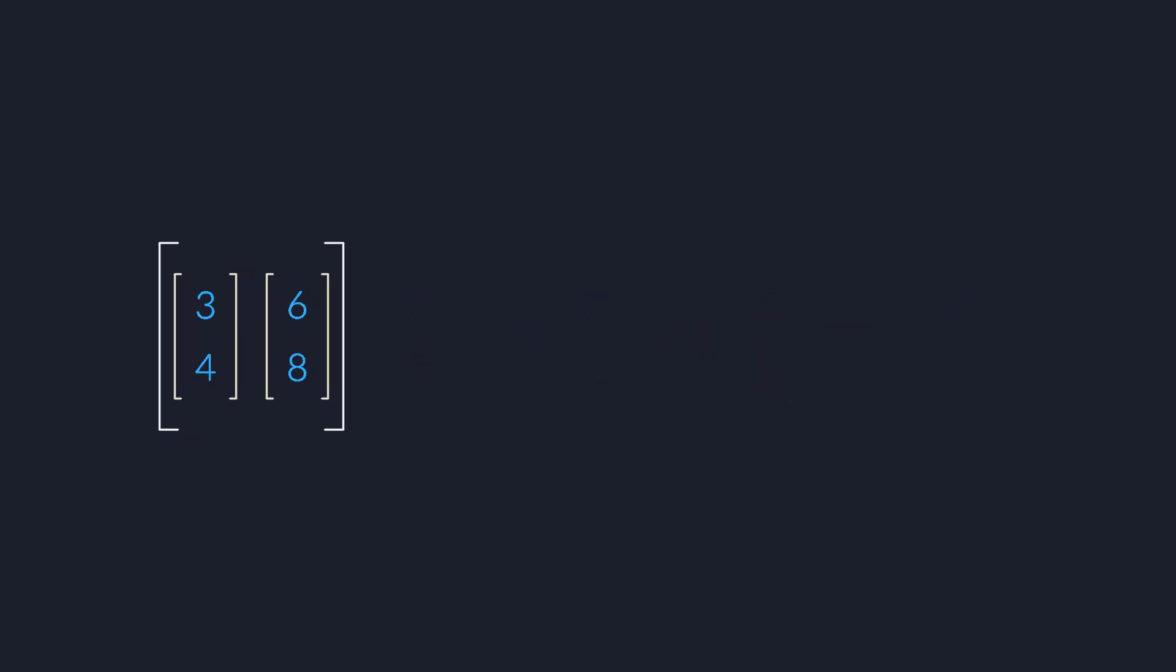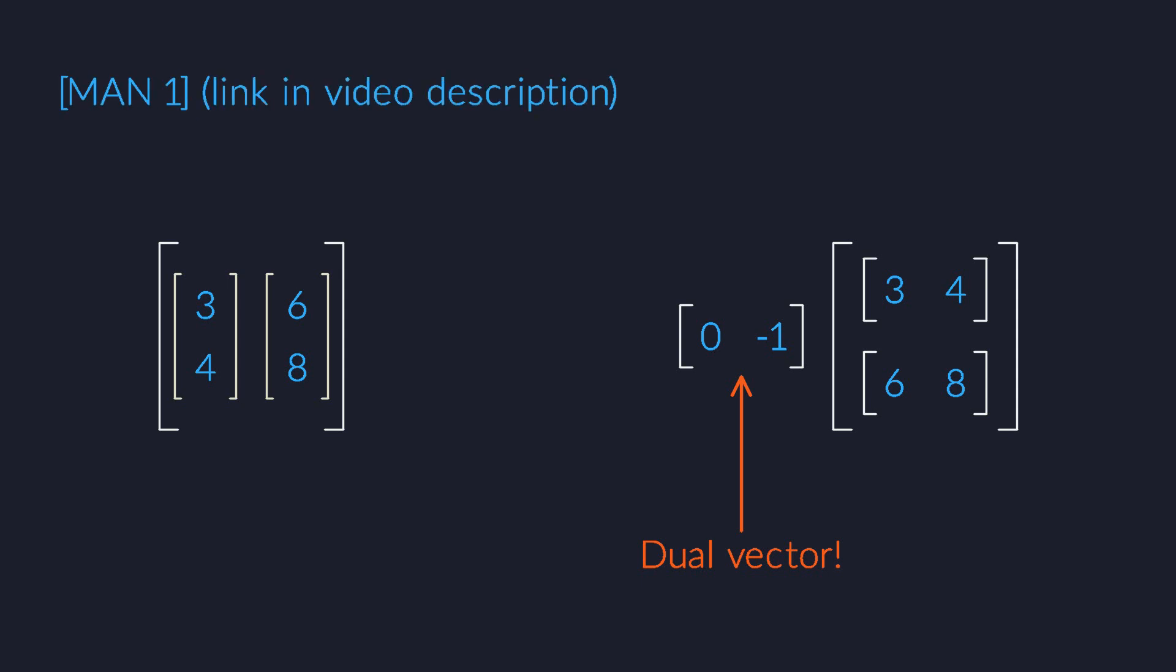When you transpose a matrix, it goes from a row of columns to a column of rows. And what does a column take as its input? In order to make the inner product work, the input should be a row this time, and we should place it on the left. That's why transpose matrices operate on dual vectors, not on vectors. You can't even really define the transpose accurately without talking about dual vectors first.